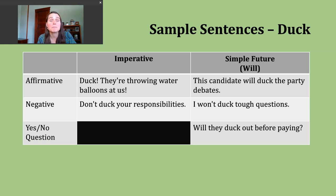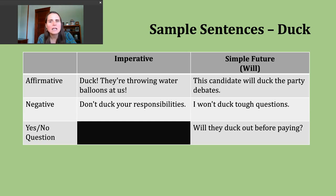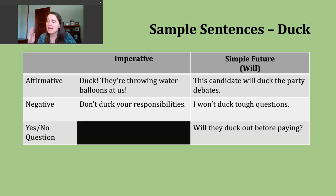Now let's move on and talk about the simple future. Today we're going to make sentences using will. Will is commonly used as people make predictions — guesses about what's going to happen in the future — and you might also hear it with promises, offers, or occasionally plans. The structure is: subject + will + base verb, and that stays the same even as the subject changes.